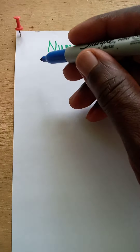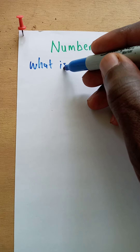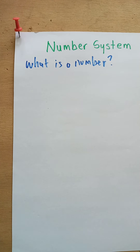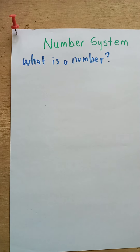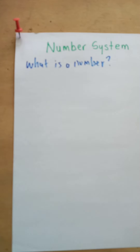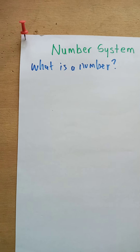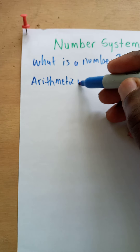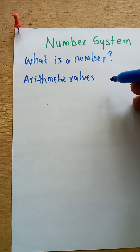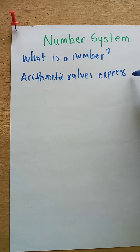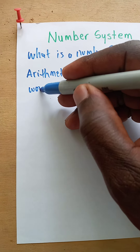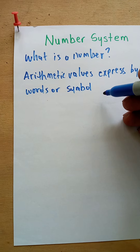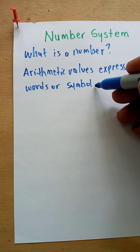A simple question: what is a number? A number is an arithmetic value which is represented by words or figures, and it represents a particular quantity. It's an arithmetic value expressed by words or symbol, representing a particular quantity.